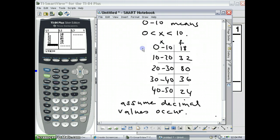So for 0 to 10, we're going to enter a mid-interval value of 5 under the calculator. And for 10 to 20, we'll put in the mid-interval value of 15, and so on.